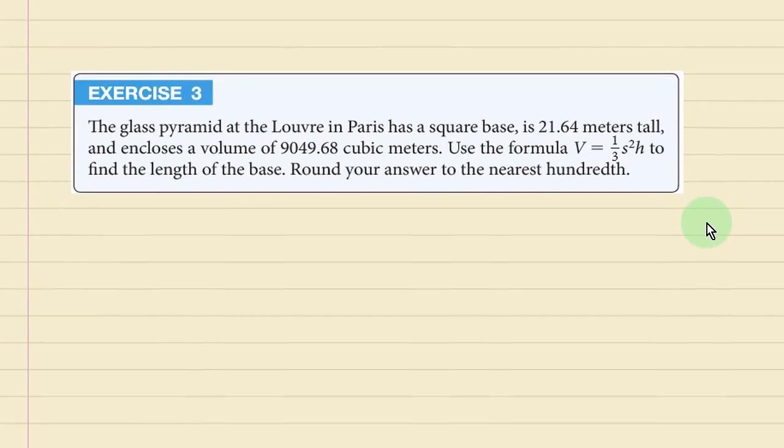For exercise three, this is one for you to do. This time this is about a pyramid with a square base instead of the last one which is a cone with a circular base. And it gives you the volume of it, so you can plug that in for V. 21.64 is the height, and you need to find what s makes that work. So that's an exercise for you to do.